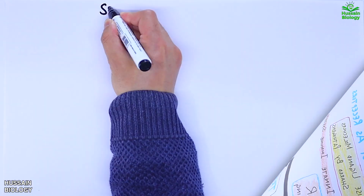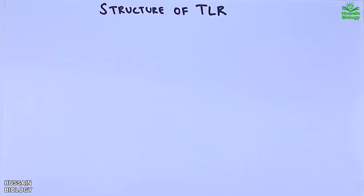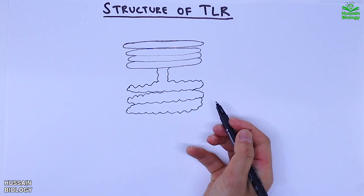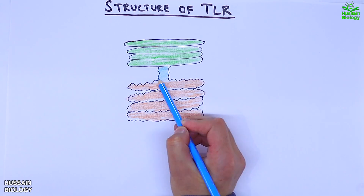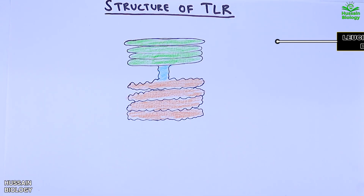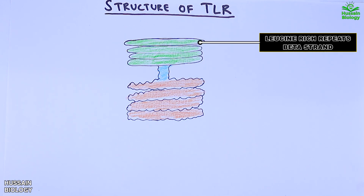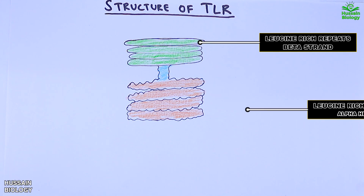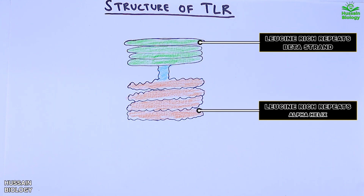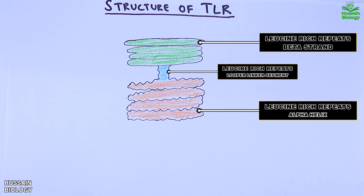Now let's get to the structure of TLR. First, we have two important extracellular structures. One is the leucine-rich repeats as a beta strand, as shown in the diagram, and the other one is the leucine-rich repeats as an alpha helix. Both of these structures are connected by a loop-linker segment, which is also a leucine-rich repeat.